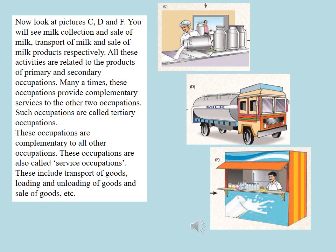Now look at pictures C, D and F. You will see milk collection and sale of milk, transport of milk, and sale of milk products respectively. All these activities are related to the products of primary and secondary occupations. Many a times these occupations provide complementary services to the other two occupations. Such occupations are called tertiary occupations.